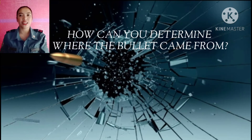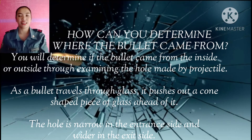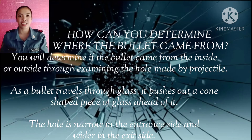How can you determine where the bullet came from? You can determine whether the bullet came from the inside or outside by examining the hole made by the projectile. As a bullet travels through glass, it pushes out a cone-shaped piece of glass ahead of it. The hole is narrow on the entrance side and wider on the exit side.